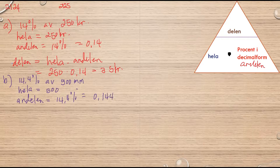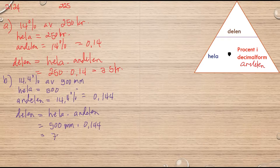Så har jag delen, lika med hela multiplisar med andelen. Hela är 500 millimeter, andelen är 0.144. Så får jag 500 multiplisar med 0.144, 72 millimeter.